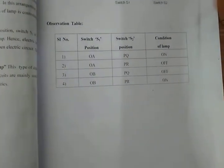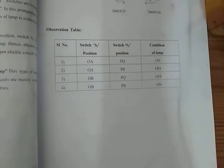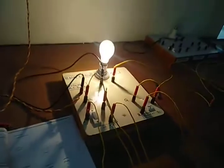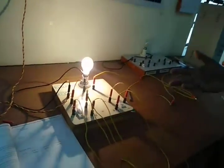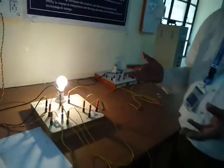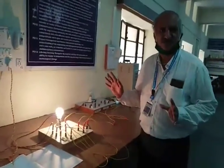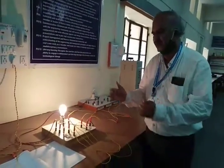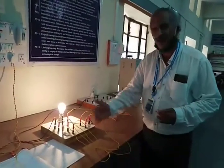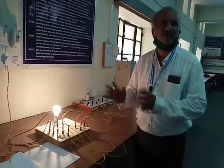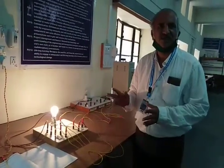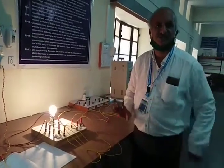For the last condition, S1 in O-B and S2 in P-R — again the lamp is ON, because this results in a closed electric circuit and current flows. In this manner, you have to verify all four conditions of different switch positions.